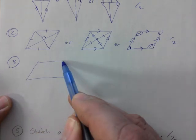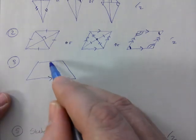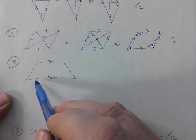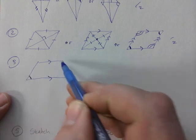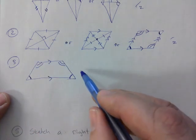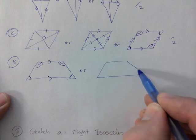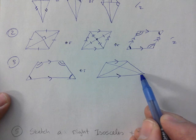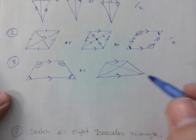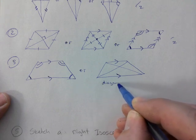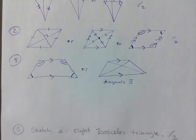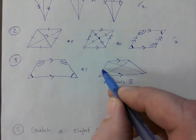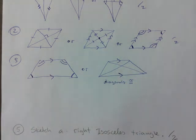Question three: isosceles trapezoid. It looks like this. One property: maybe this angle is the same as that one, and this one is the same as that one — that would be two marks. Or you could say these sides are parallel and the diagonals are congruent. They don't bisect, so you'd just write 'diagonals are congruent' to make sure you mention that. You could also mention that these two sides are the same — that's another thing that gets you two marks.